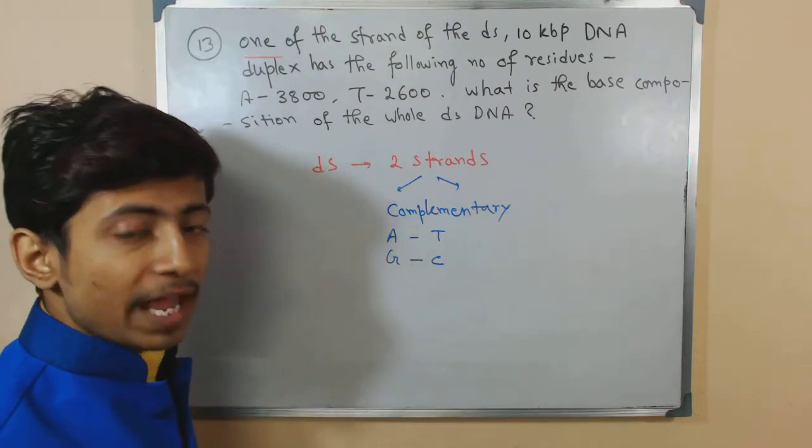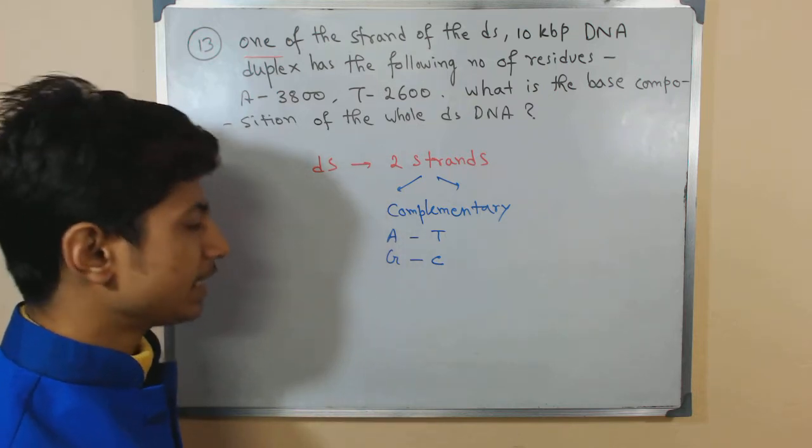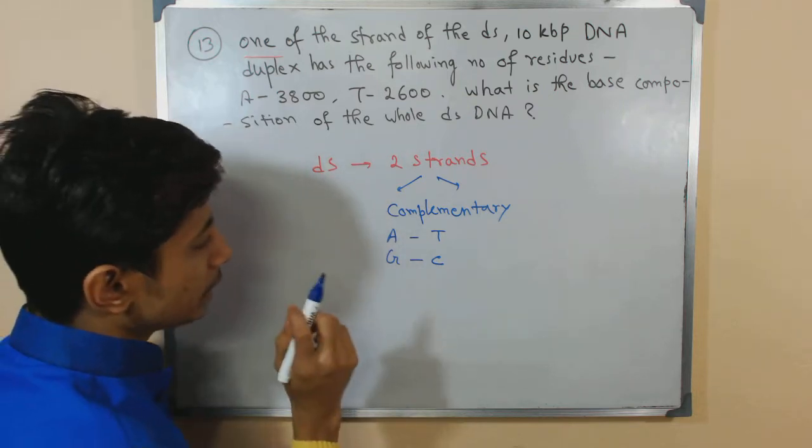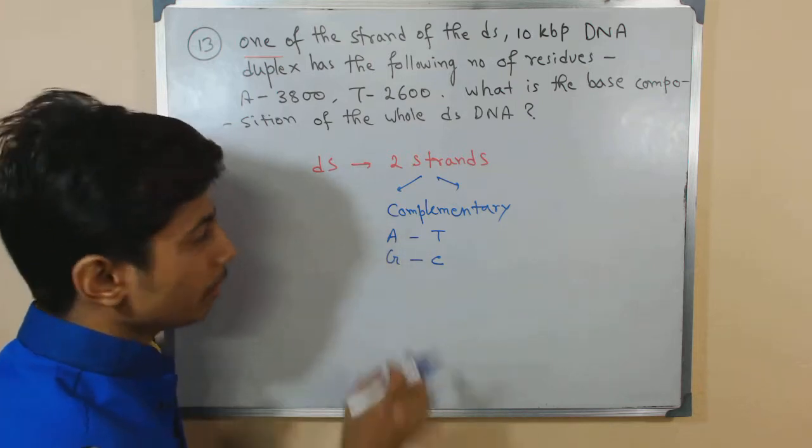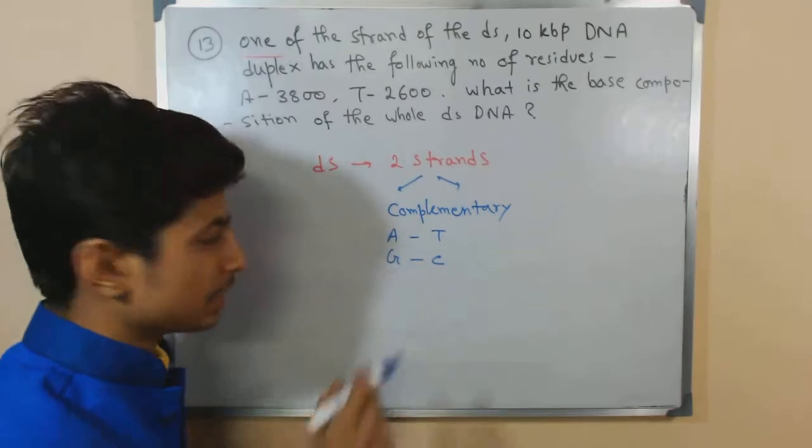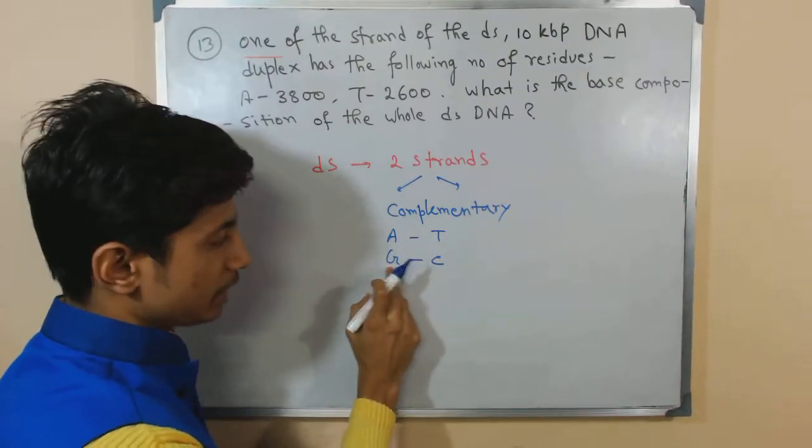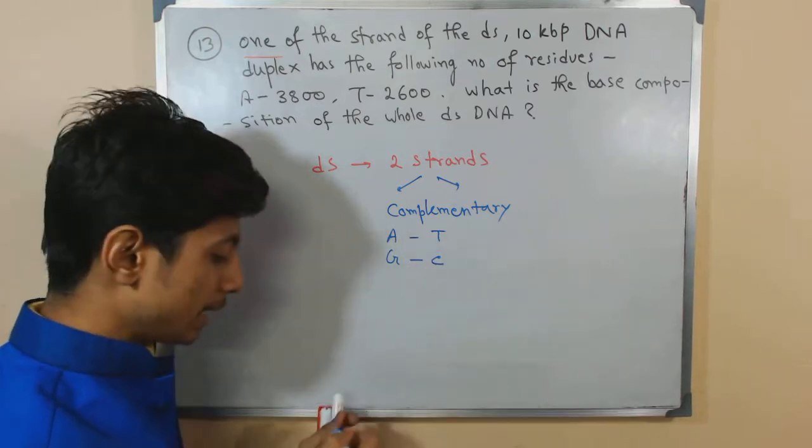According to Chargaff's rule, the base composition shows that the number of A equals the number of T, and the number of G equals the number of C.